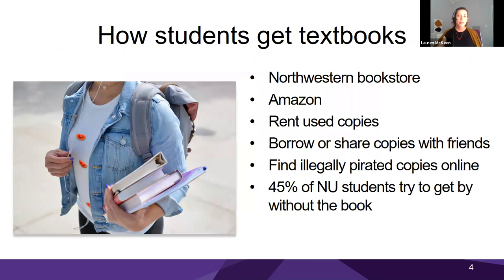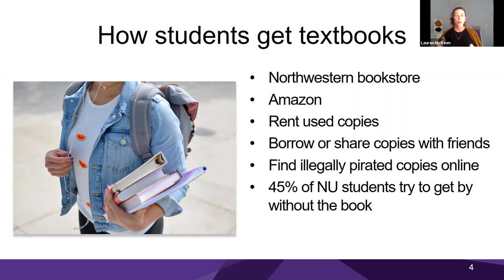Under normal circumstances, students have had many options for getting their textbooks. But since the pandemic struck, finding access has been a real challenge. During spring quarter alone, due to closures at warehouses and increased demand for shipping, shipping times at the Norris bookstore went from about three days to, in some cases, up to five weeks. Students were no longer able to rely on physical course reserves or even borrowing or sharing copies with friends. Many rent used copies, but as one student said, renting can cost up to $120 per quarter — and in the end, you still have to give the book back.